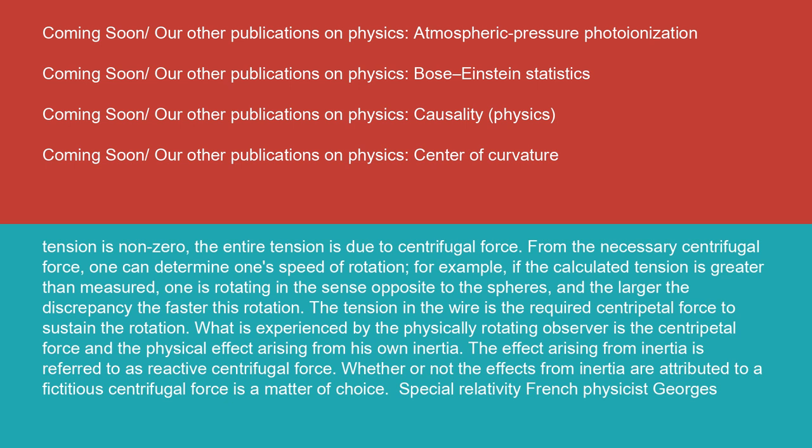The tension in the wire is the required centripetal force to sustain the rotation. What is experienced by the physically rotating observer is the centripetal force and the physical effect arising from his own inertia. The effect arising from inertia is referred to as reactive centrifugal force. Whether or not the effects from inertia are attributed to a fictitious centrifugal force is a matter of choice.